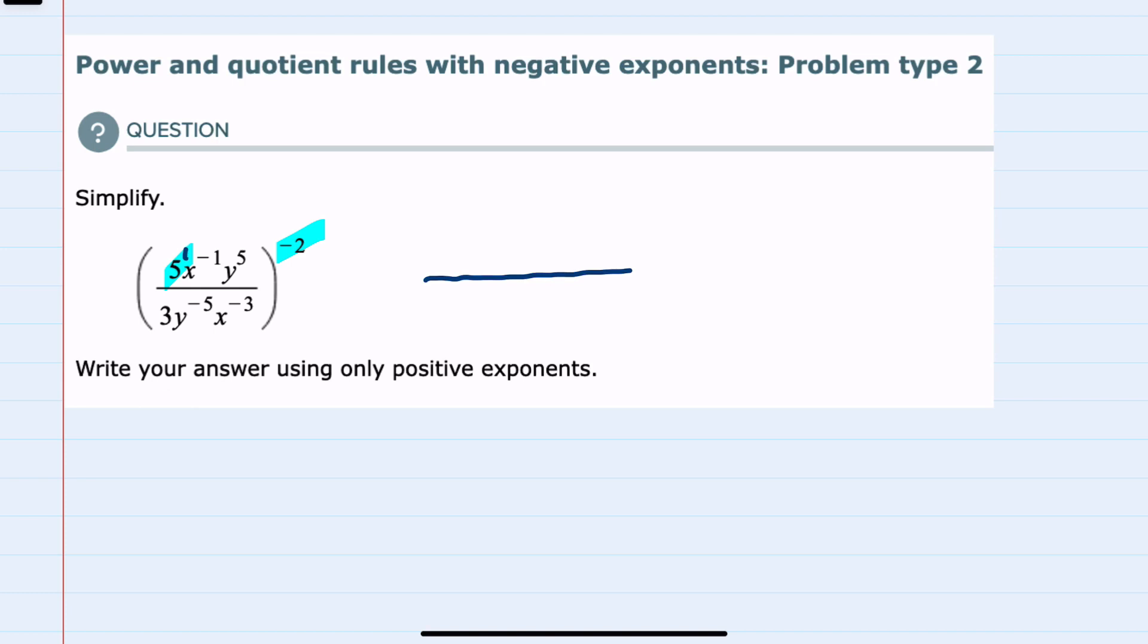So our 5 is just a 5 to the first power, and when there is a power inside and a power outside we multiply. So 1 times negative 2 is negative 2. For my x negative 1, I again have a power inside and outside that get multiplied: negative 1 times negative 2 is 2. My y^5 gets raised to the negative 2 power, and the powers again multiply: 5 times negative 2 is negative 10.